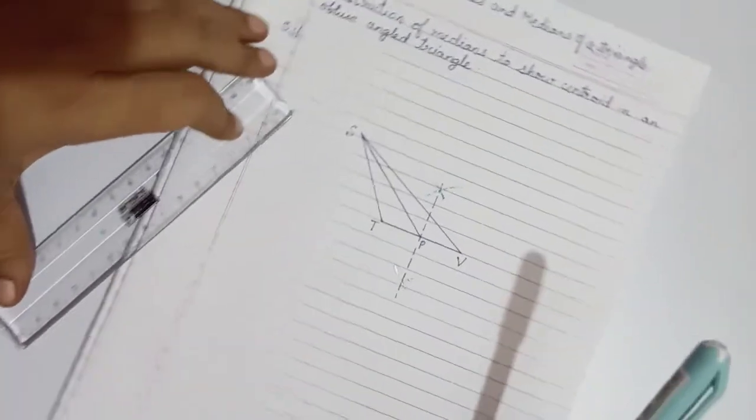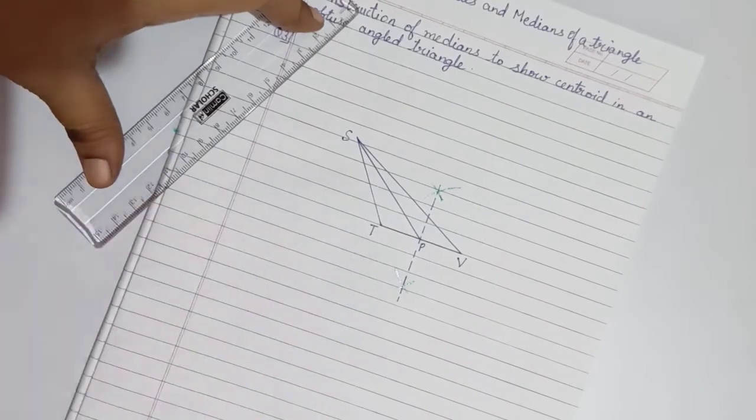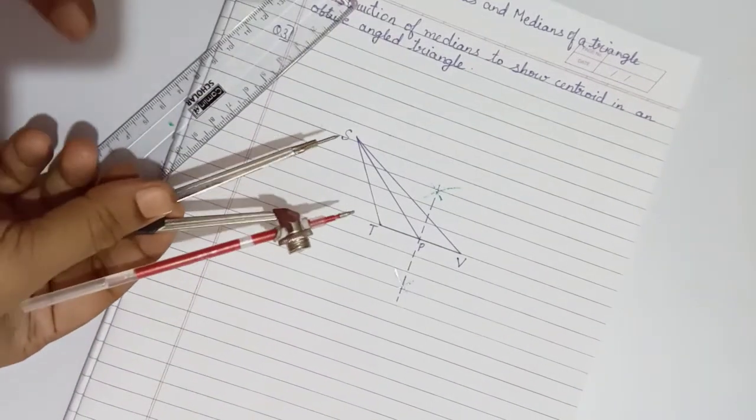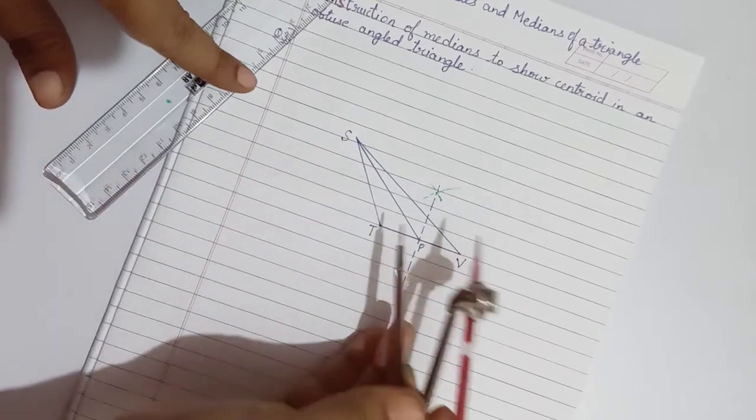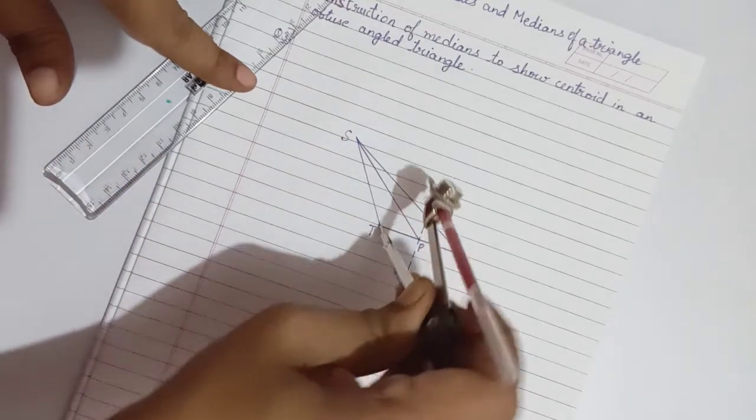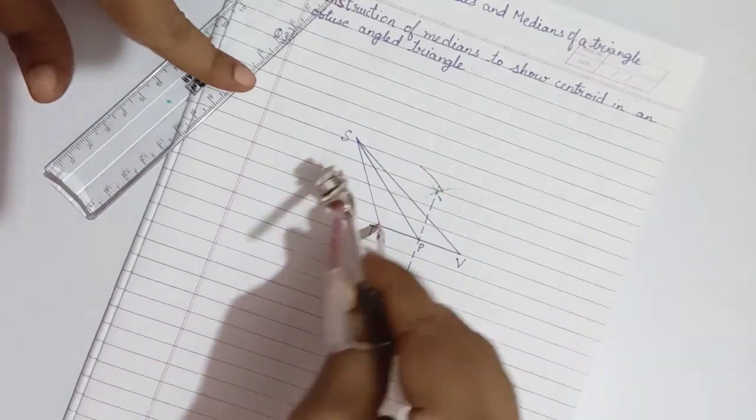Now let us do the same procedure with segment ST. Take more than half on the rounder. From point T, draw an arc up and down.